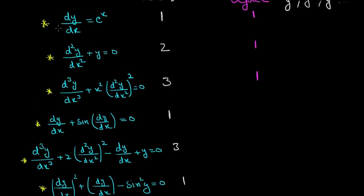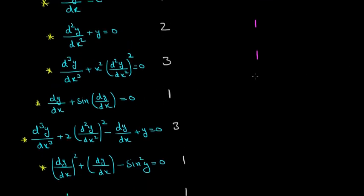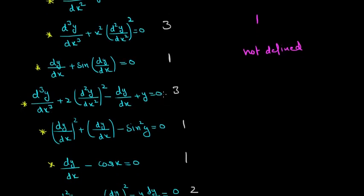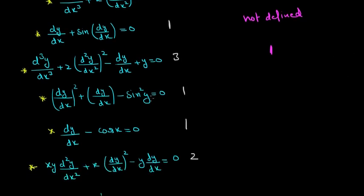All the previous ones were in polynomial form — like y', y'', y''' plus terms — and here is a y'' squared, which is also polynomial form. But this one is not in polynomial form of y', so the degree here is not defined. For this equation, the highest derivative is y'' and its power is 1, so even though it might look like 2, its degree is 1 because it is in polynomial form.